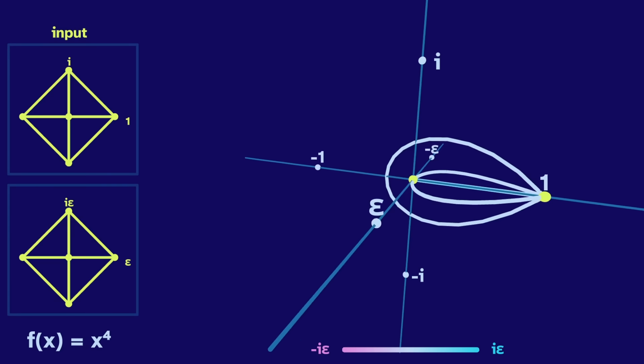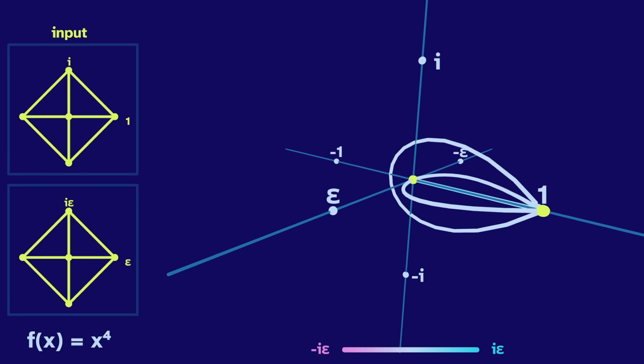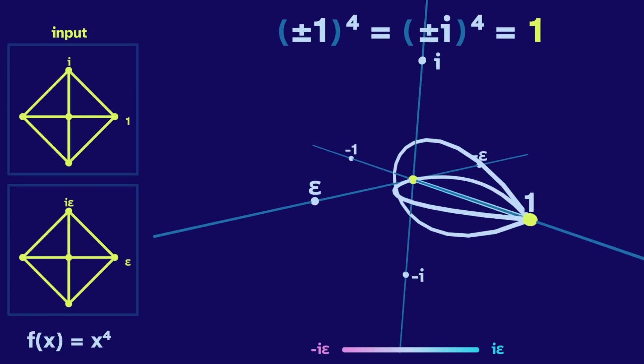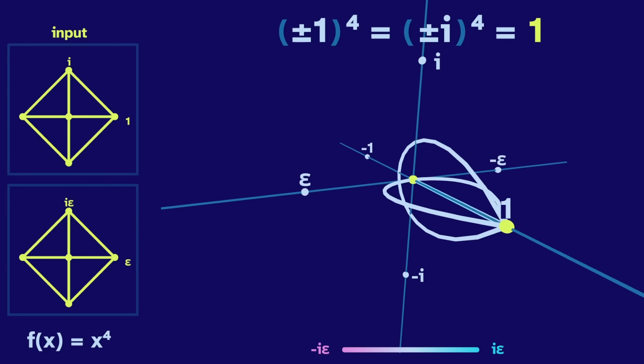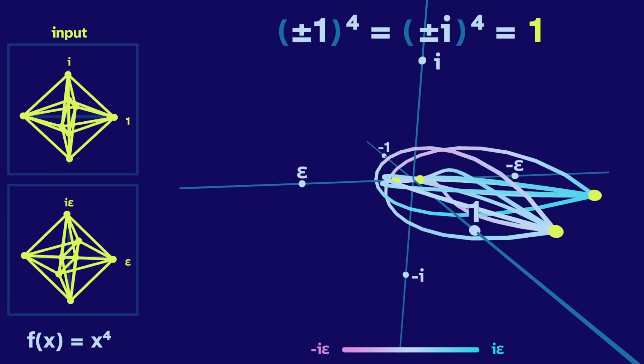With the fourth power, we get curves between just two points, since the non-dual vertices all tesseract to one. And spinning this is just more of the same.